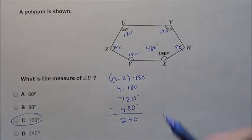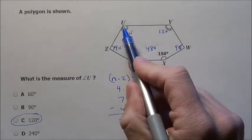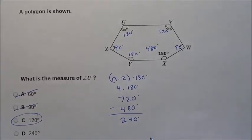Now I could have gotten C without even doing anything here to be honest, because you see that U is more than 90. It's an obtuse angle. So right away, A is gone and B is gone.